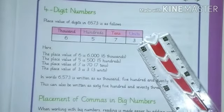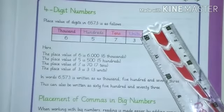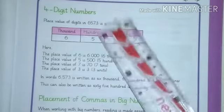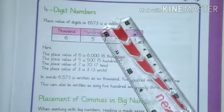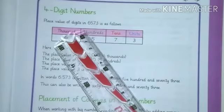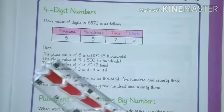We know 3 is unit place, 7 is at tens place, and 5 is at hundred place. Last one, 6 is at thousand place. We know 6 is here thousand. The place value of 6 is thousand.